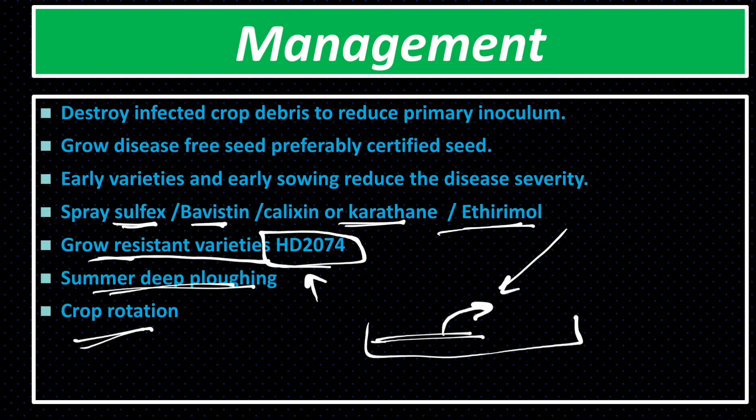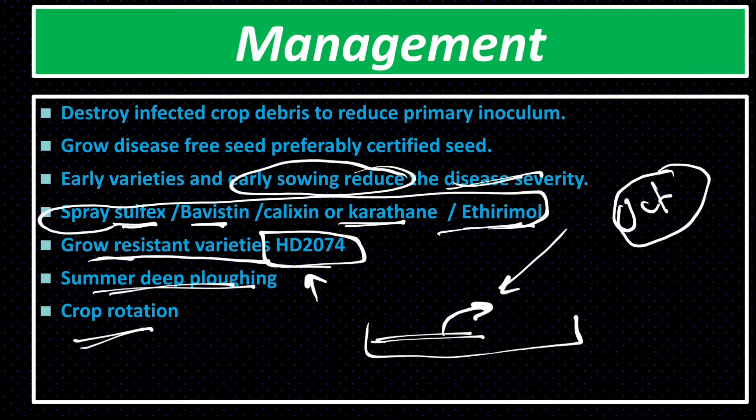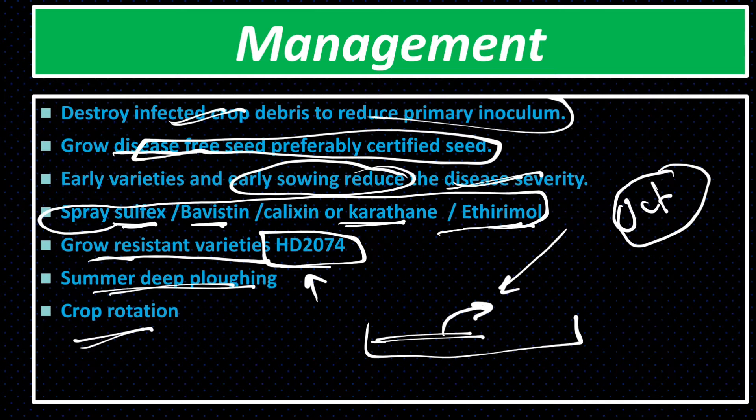Spray sulphex, bavistin (carbendazim), karathane (dinocap), and ethirimol if the disease is severe. Early varieties and early sowing reduce disease severity — sowing should be done in October. Late sowing increases the chances of powdery mildew. Always use disease-free and certified seeds. Destroy infected crop debris to reduce primary inoculum.